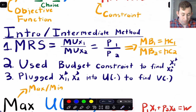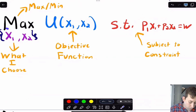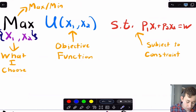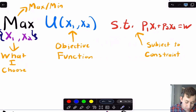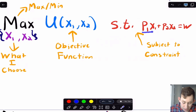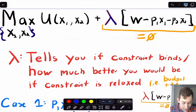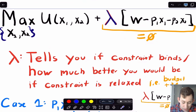Now, for the same utility maximization problem using a Lagrangian: we're maximizing utility by choosing x1 and x2 — those are in curly brackets. The utility function is our objective function (the thing we're trying to maximize or minimize). We still have the budget constraint p1·x1 + p2·x2 = w. To form the Lagrangian, we add lambda times the constraint set equal to zero, giving us the full Lagrangian with the multiplier lambda.